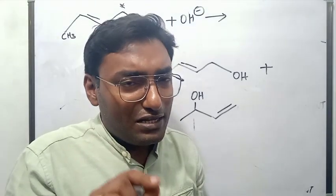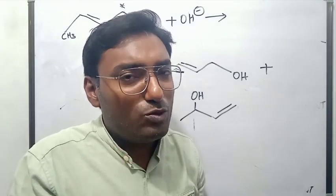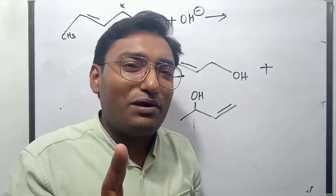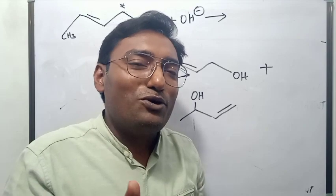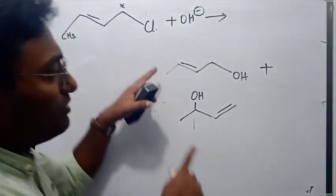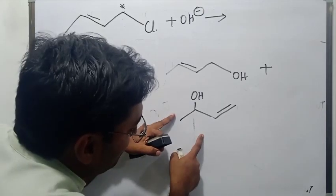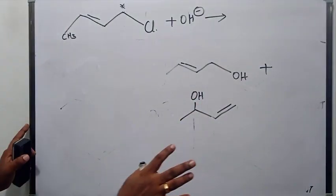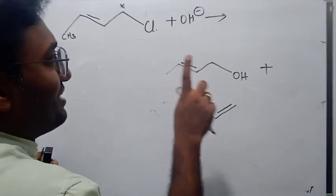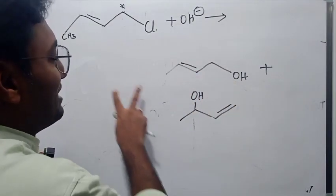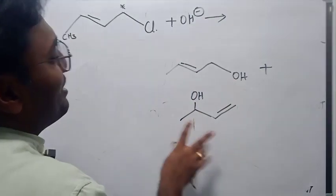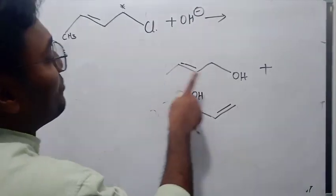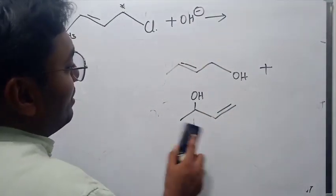What about the stereochemistry — the configuration of the products formed? Remember, this is an SN1 reaction. So both products, whether the normal product or the rearrangement product, will exist as both inverted and retained configurations. The inverted product will be formed, and the retained product will also be formed, with a preference for the inverted product.